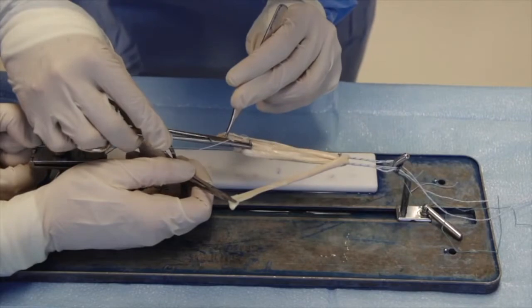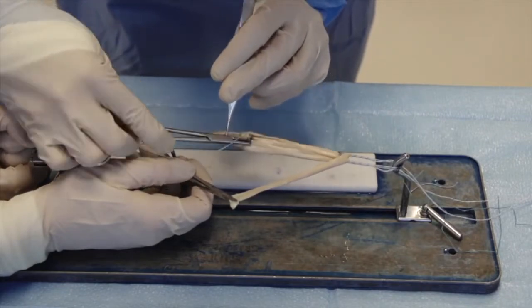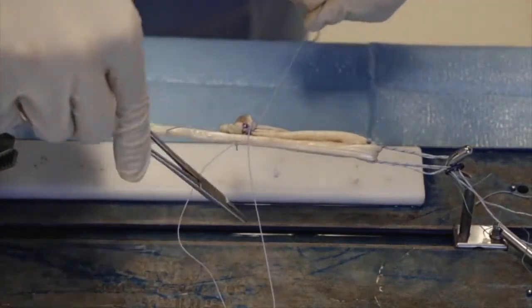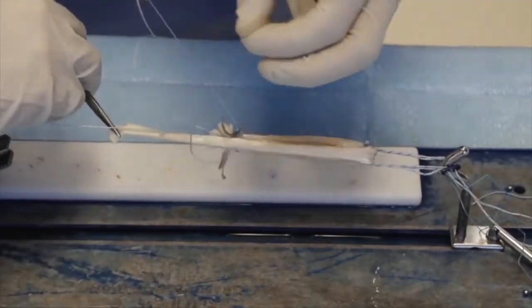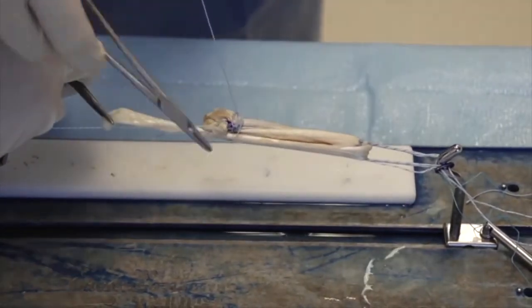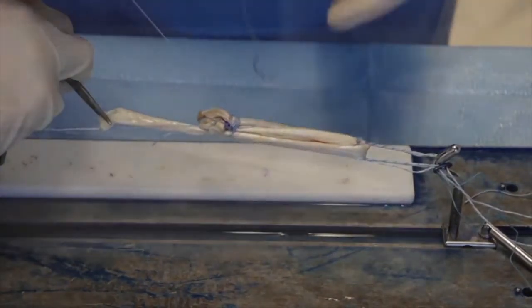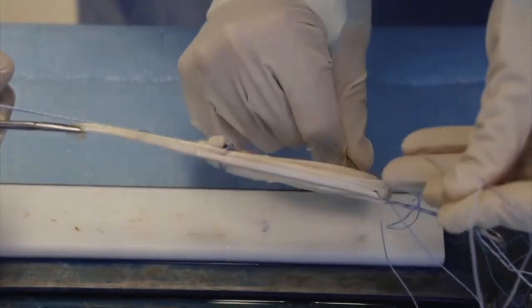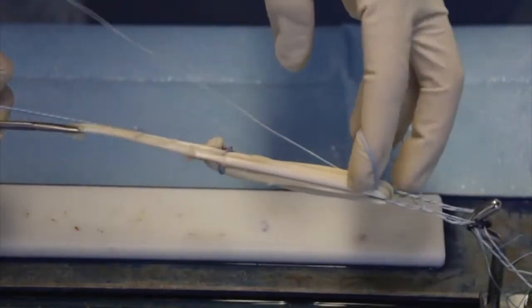A needle is passed at the end of the three strand graft through all five strands. The five strand graft is then whip stitched with fiber loop from proximal to distal.